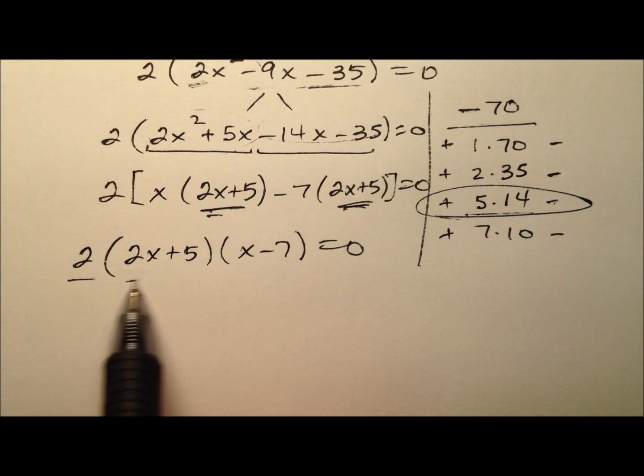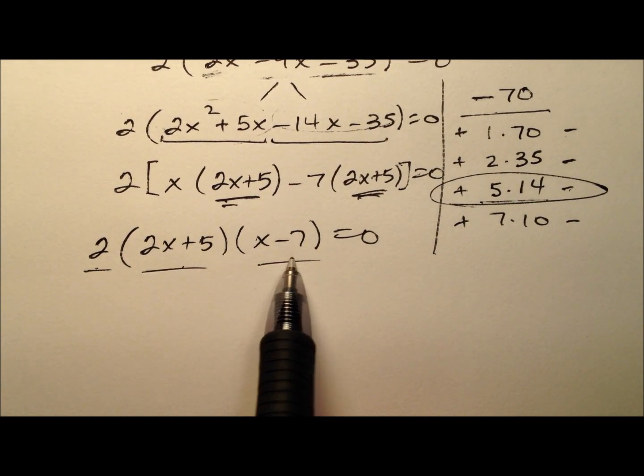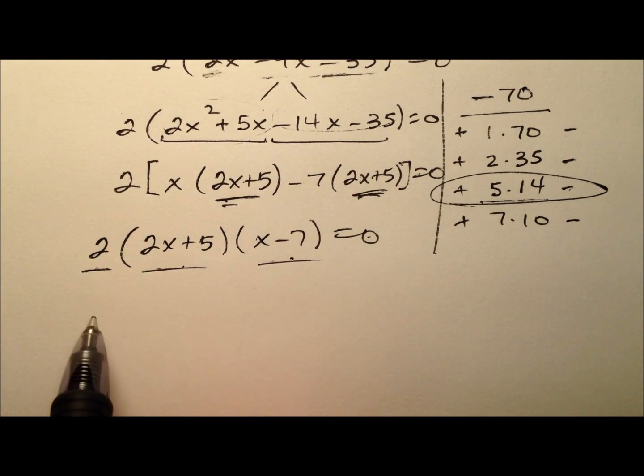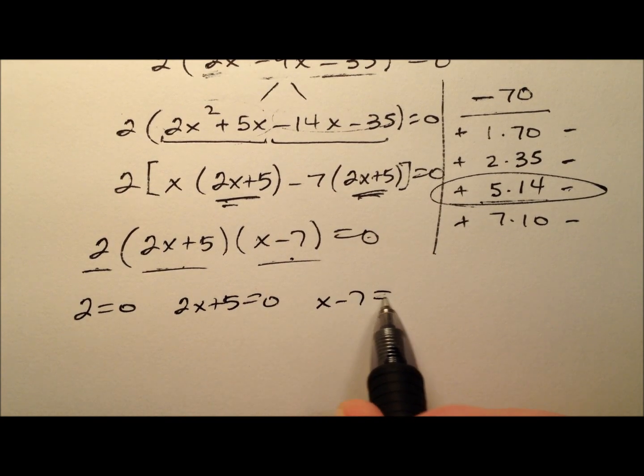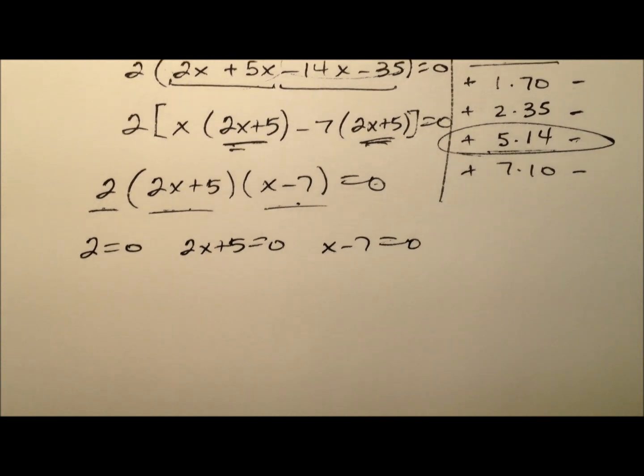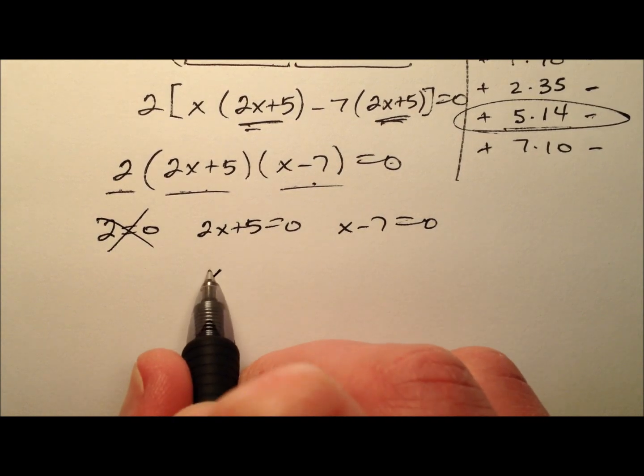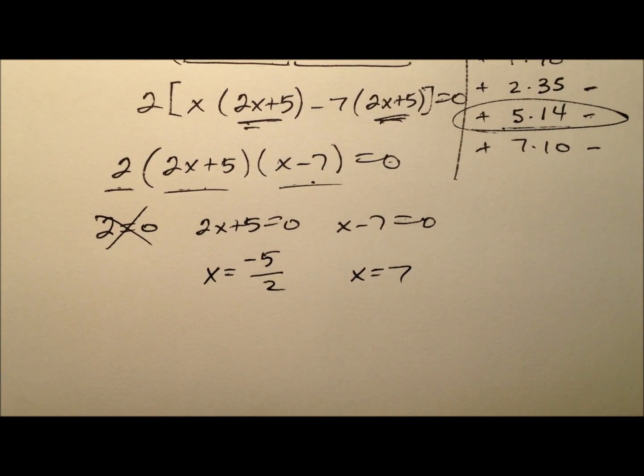So here we have our complete factorization of our quadratic trinomial. We're going to use the 0 property of multiplication, which says if we're multiplying all these things together and we get 0, well, one of these things has to be 0. So we'll account for all of them. So we'll say 2 equals 0, 2x plus 5 equals 0, x minus 7 equals 0. Well, of course, this 2 equals 0 doesn't give us anything. It's a false statement. There's not even a variable included. And so this guy will give us negative 5 over 2. And this guy will give us a positive 7. So we're going to say the values for x in our case are negative 5 halves and 7.